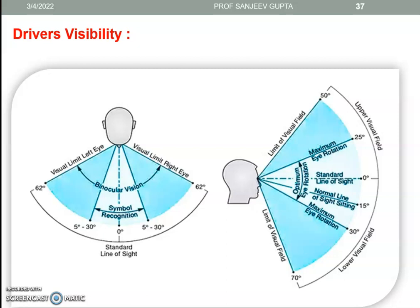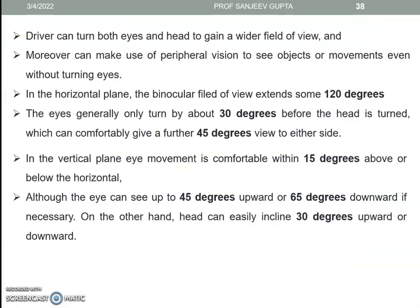Regarding maximum eye rotation: the driver can turn both eyes and head to gain a wider field of view, and can make use of peripheral vision to see objects and movement even without turning the eyes. In the horizontal plane, the binocular field of view extends about 120 degrees. The eyes generally only turn by about 30 degrees before the head is turned, which can comfortably give a further 45 degrees to either side. In the vertical plane, eye movement is comfortable within 15 degrees above and below the horizontal, although the eye can see up to 45 degrees upward or 65 degrees downward. The head can also incline 30 degrees upward and downward.